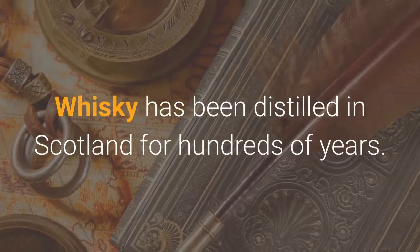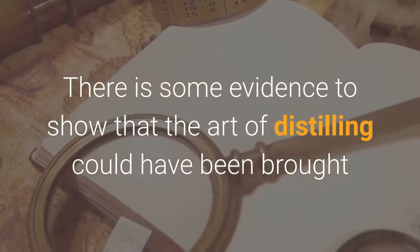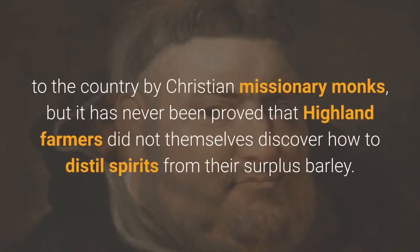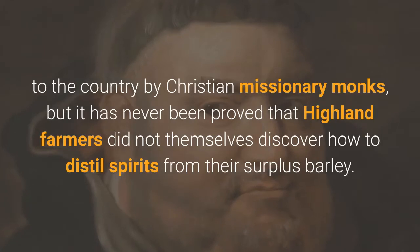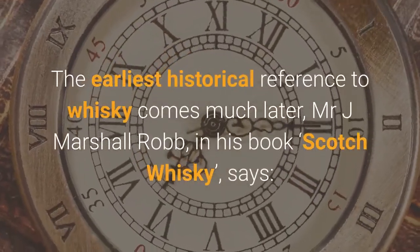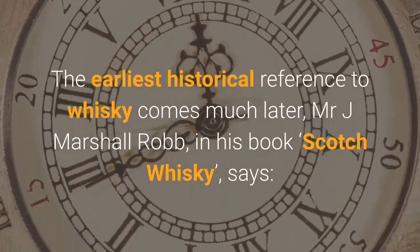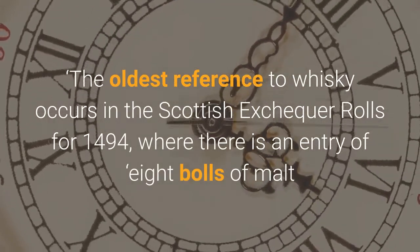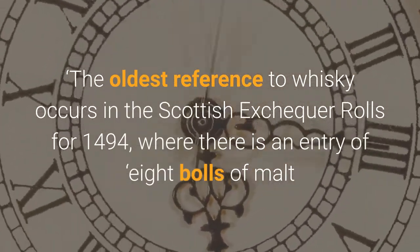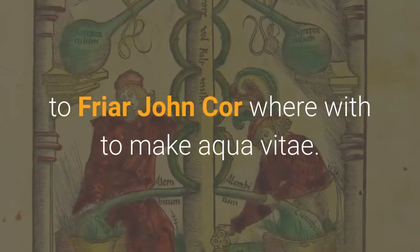Whisky has been distilled in Scotland for hundreds of years. There is some evidence to show that the art of distilling could have been brought to the country by Christian missionary monks, but it has never been proved that Highland farmers did not themselves discover how to distill spirits from their surplus barley. The earliest historical reference to whisky comes much later. Mr. J. Marshall Robb, in his book Scotch Whisky, says the oldest reference occurs in the Scottish Exchequer Rolls for 1494, where there is an entry of eight bowls of malt to Friar John Corr wherewith to make aqua vitae.